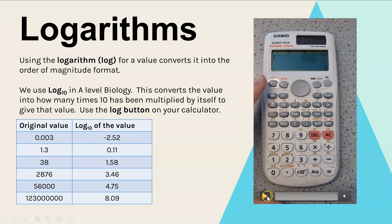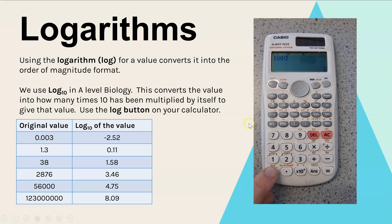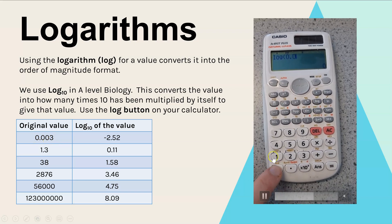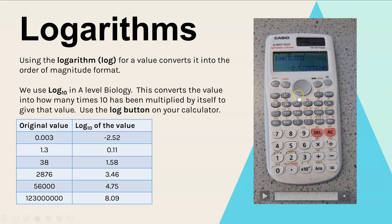I'm just going to show you how you would do this on your calculator. For the first row, to work out the log of 0.003, you press the log button, enter your original which was 0.003, press equals, and then we get our log. So minus 2.52, I rounded it to three decimal places. I've then done that for the rest of them to create our log values.